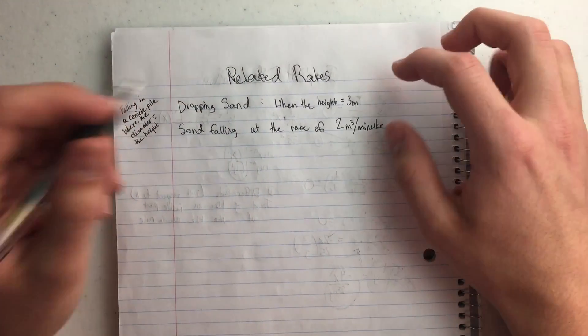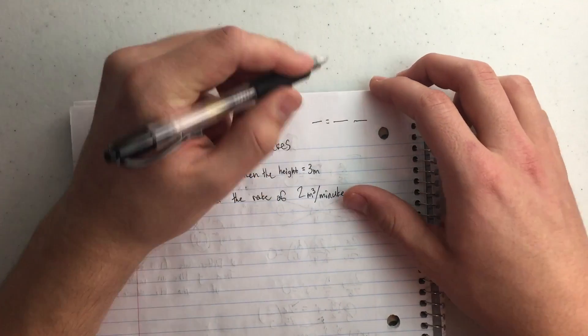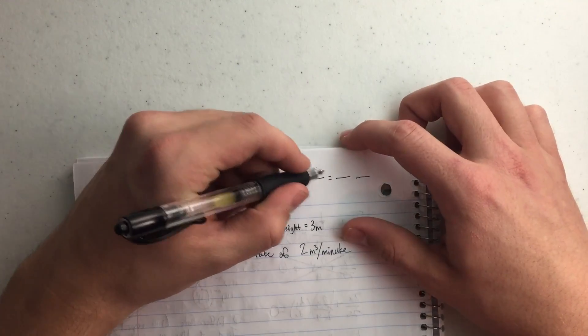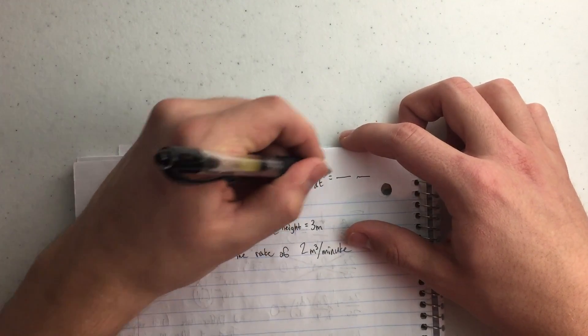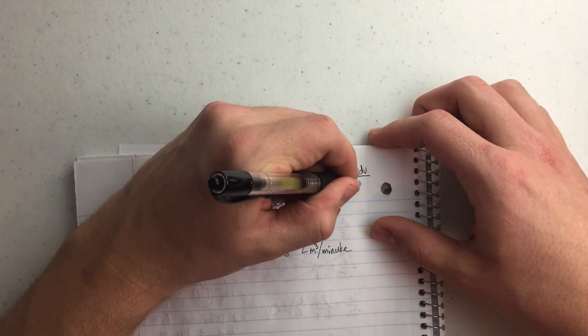Basically it's built off of an idea of the chain rule of, it looks like this, and so in this example we're going to be using dh over dt equals dh over dv times dv over dt.